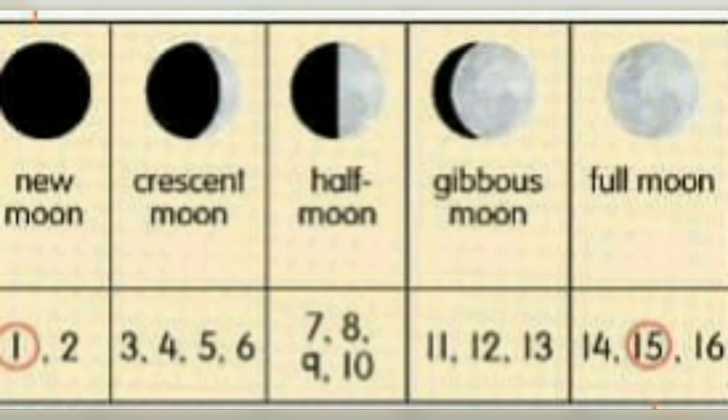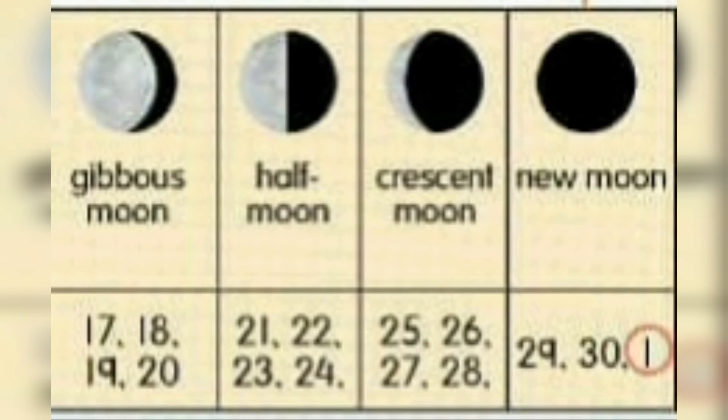Then, crescent moon from day 3 to day 6. Half moon, day 7 to day 10. Gibbous moon, 11 to 13. And full moon, 14 to 16. And then, back to gibbous moon, 17 to 20. Half moon, 21 to 24. And crescent moon from day 25 to 28. And finally, back to new moon again, 29 to 1 again.